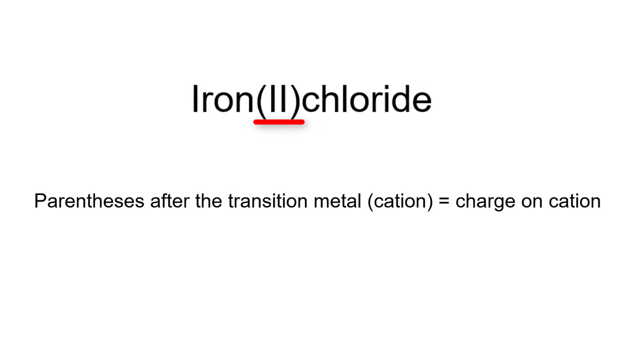First, we will go from the name to the formula. The main difference when working with a transition metal is that we have parentheses after the name of the transition metal that will tell us the charge. And you may be asking yourself, why? The reason is that transition metals can have multiple charges to them, and this is the way that we let people know what that charge is on the metal.